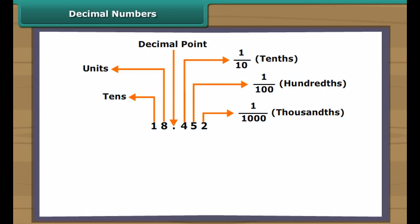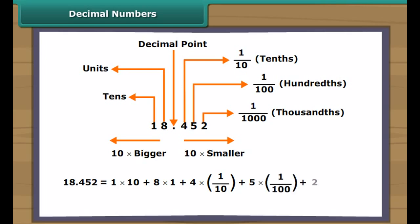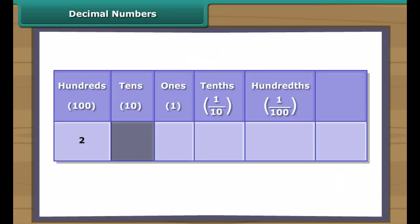Friends, look at this number having a decimal point. As we move further left, every number place gets 10 times bigger. As we move further right, every number place gets 10 times smaller. The given number can be written in expanded form as 1×10 + 8×1 + 4×(1/10) + 5×(1/100) + 2×(1/1000). Similarly, if we know the place values of each digit in a decimal number, we can write the number.